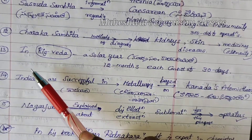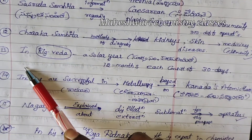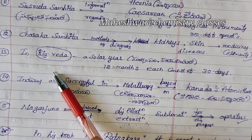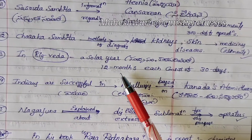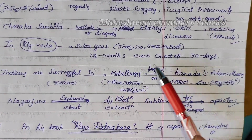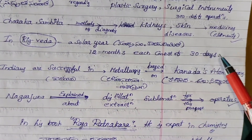In the Rigveda, a solar year of 12 months each consisting of 30 days was described.